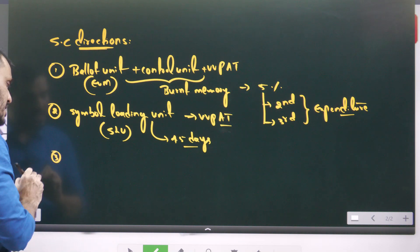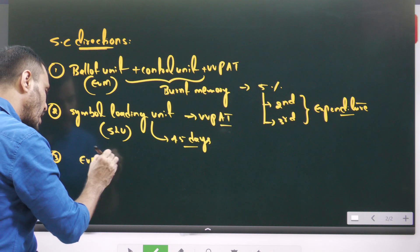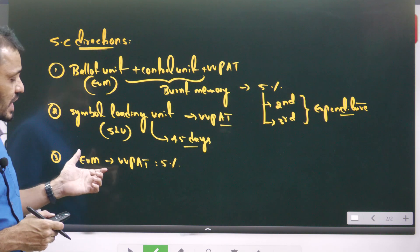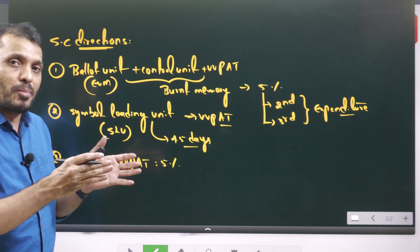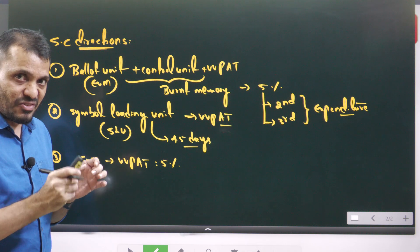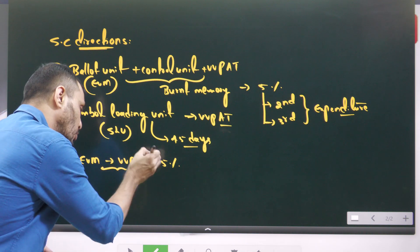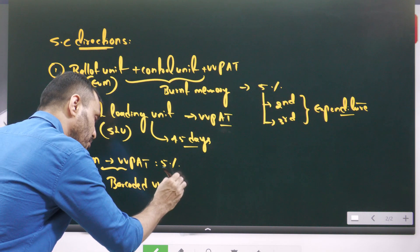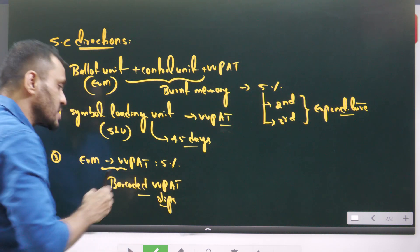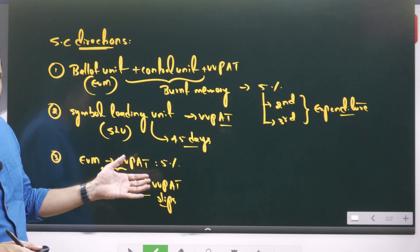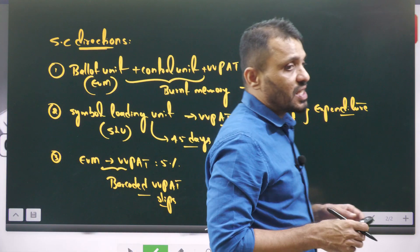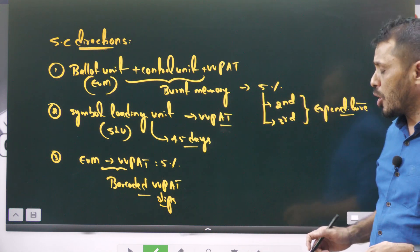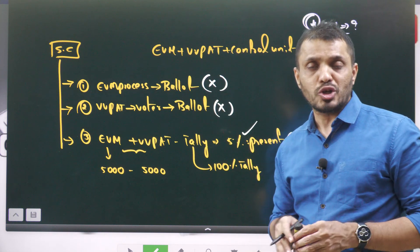The third direction relates to the ongoing five percent VVPAT-EVM tally. Out of 100 EVMs, five are picked and their respective VVPAT boxes opened and counted manually. The Supreme Court recommended using bar-coded VVPAT slips during this counting process, subject to feasibility as determined by the Election Commission of India.